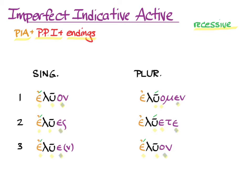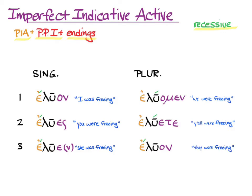That's the whole conjugation of the imperfect indicative active of luo. Eluon, I was freeing. Elues, you were freeing. Elue or eluen, she was freeing or he was freeing or it was freeing. Eluomen, we were freeing. Eluete, y'all were freeing. And eluon, they were freeing.